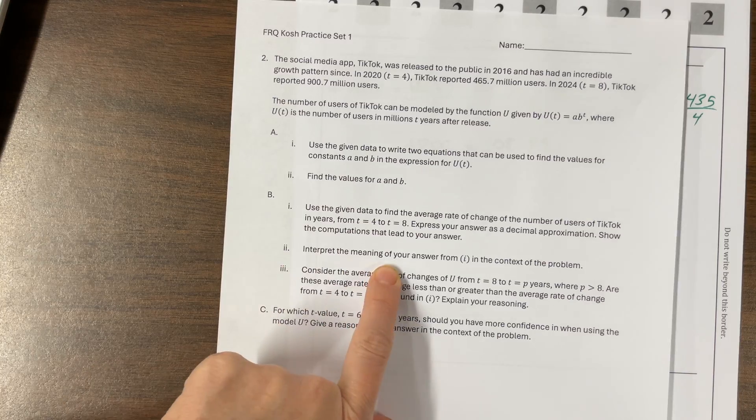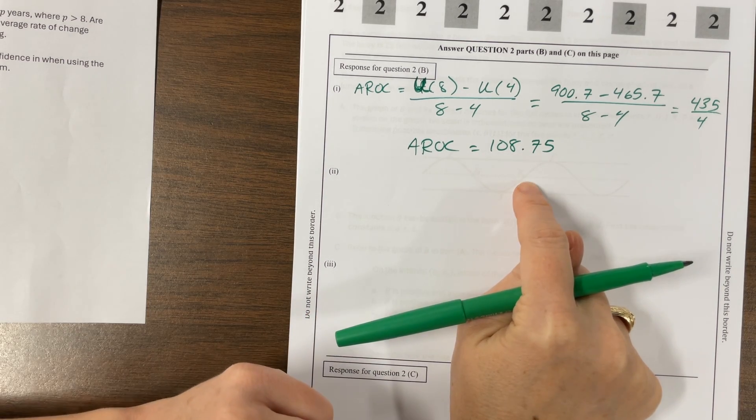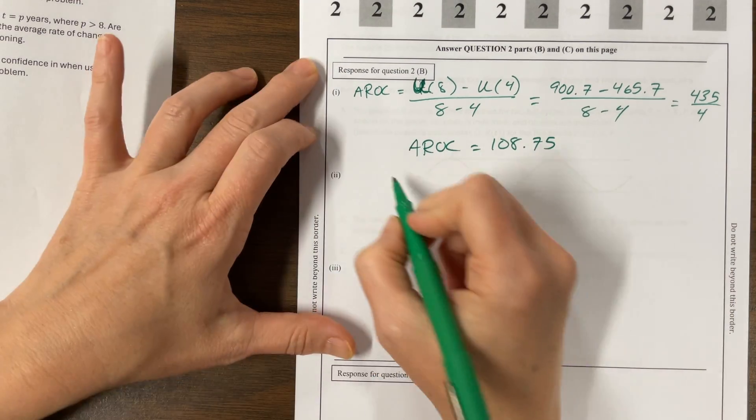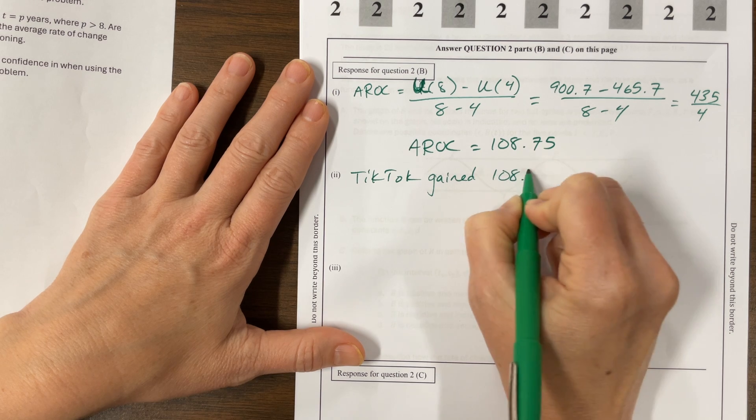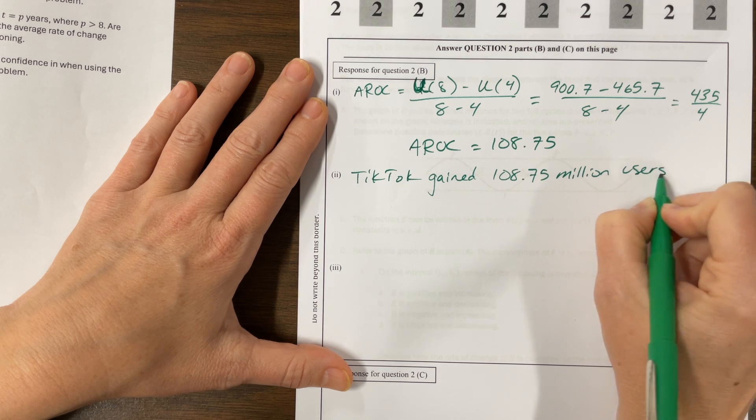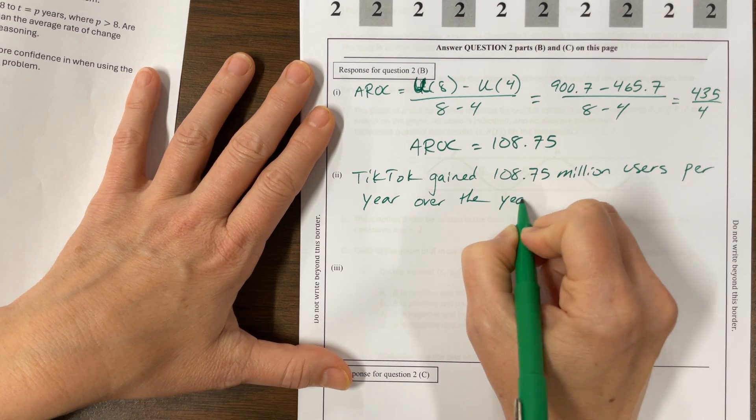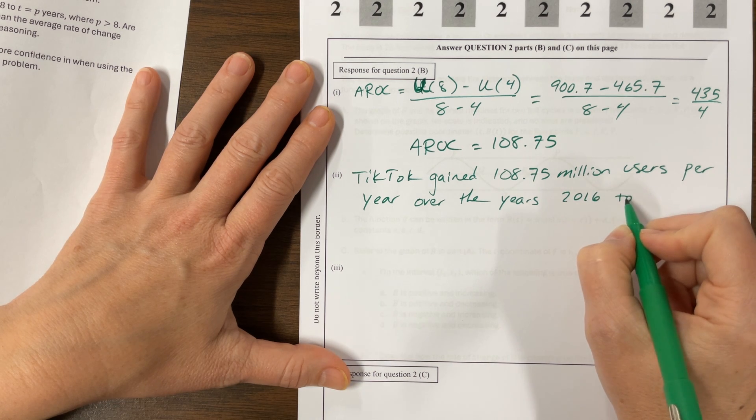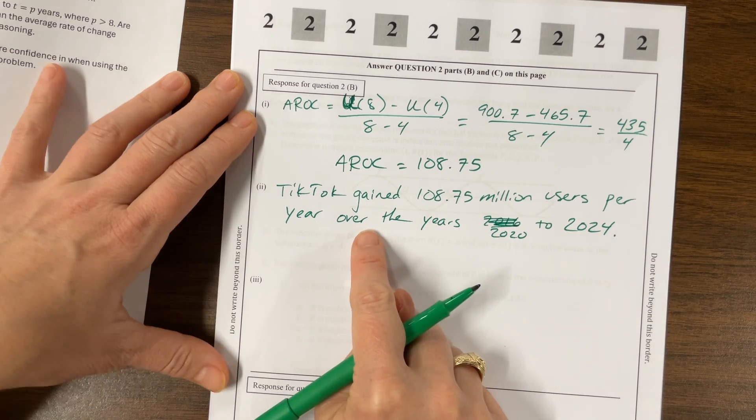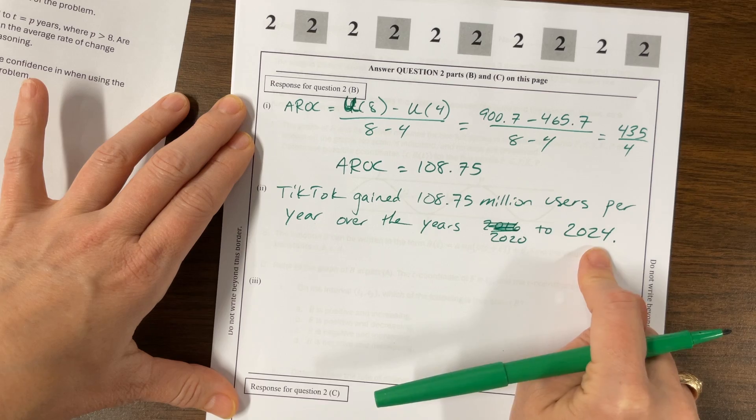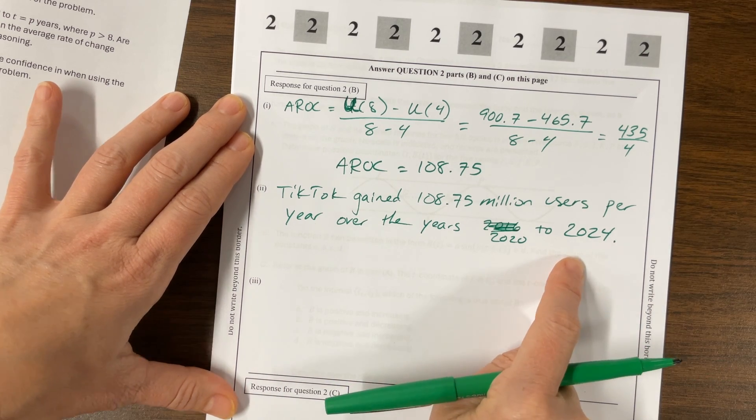Then they say, interpret the meaning in the context of the problem. Okay, so what's happening here, our average rate of change is, we were talking a number of millions of users per year. TikTok gained 108.75 million users per year over the years 2020 to 2024. I should ask the other teachers if you would require your students to write this part. I think it's definitely million users per year is definitely what we want.